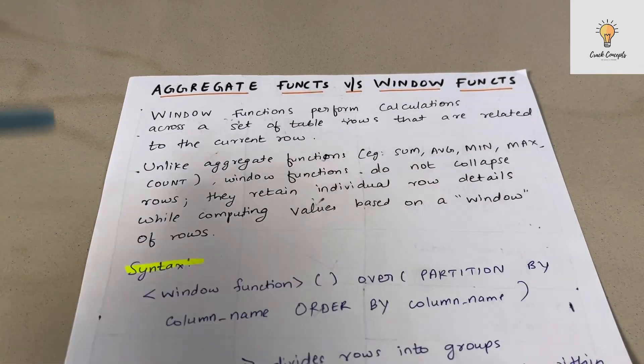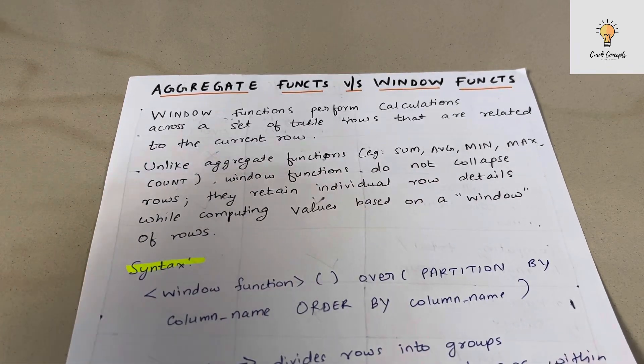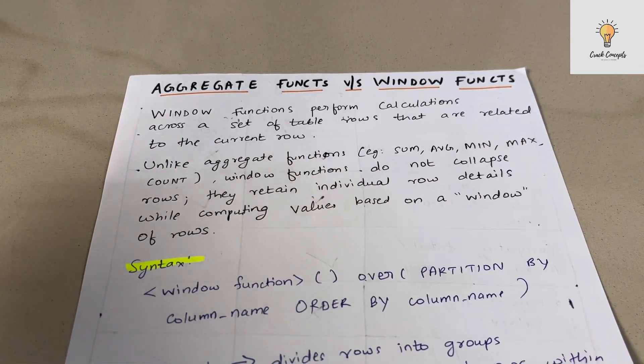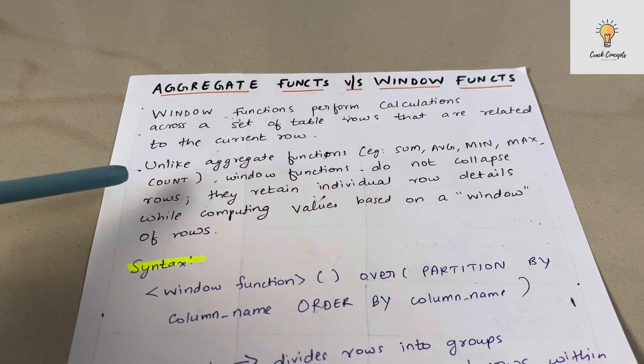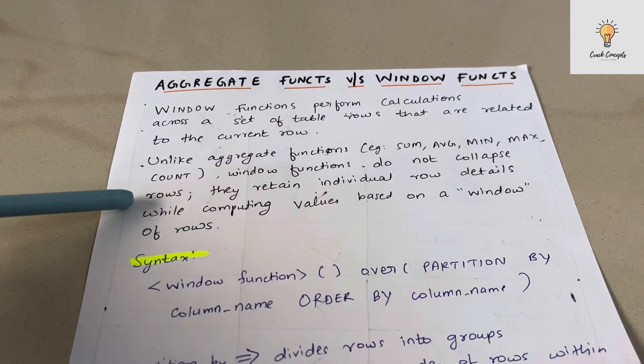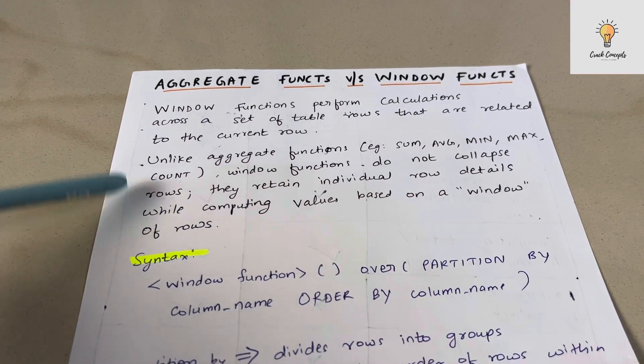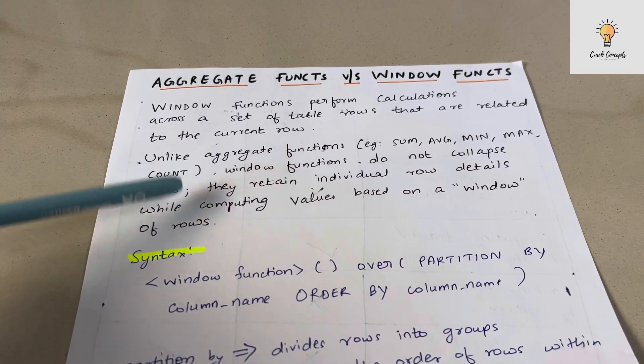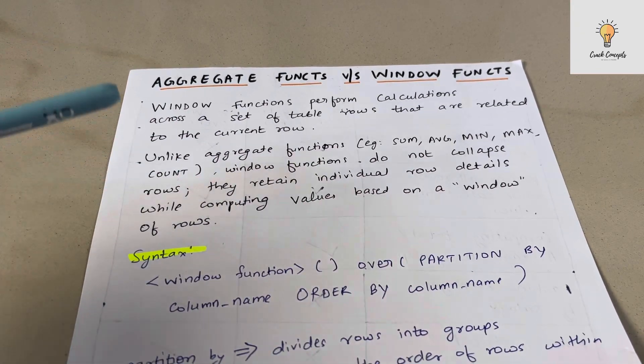Unlike aggregate functions — for example SUM, AVERAGE, MIN, MAX, COUNT — window functions do not collapse rows. They retain individual row details while computing values based on a window of rows.